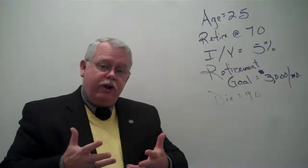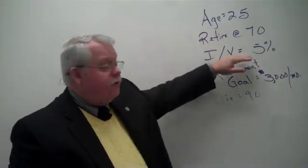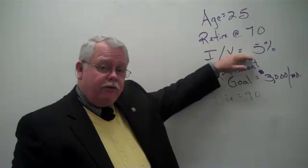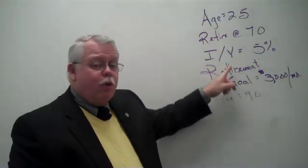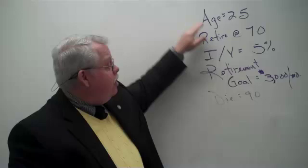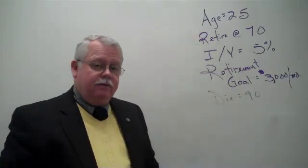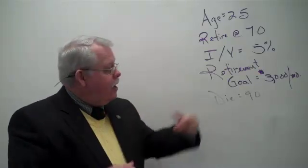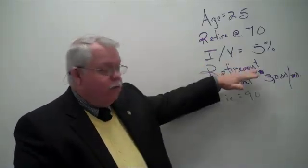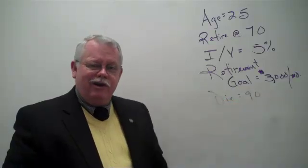The question is, if he starts today earning 5% on his investments, how much money per month does he need to be saving from now until age 70 so that he'll have a nest egg built that he can draw from over his golden years, his retirement years?